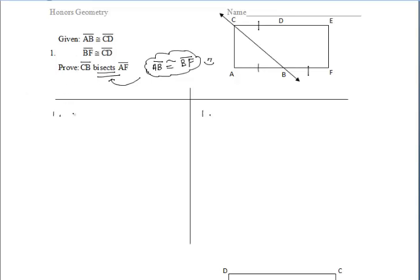Let's go ahead and write down what we're given. We're given that segment AB is congruent to segment CD — because it's given. And for step 2, we're given that segment BF is congruent to segment CD as well — and how do we know that? Because it's given.